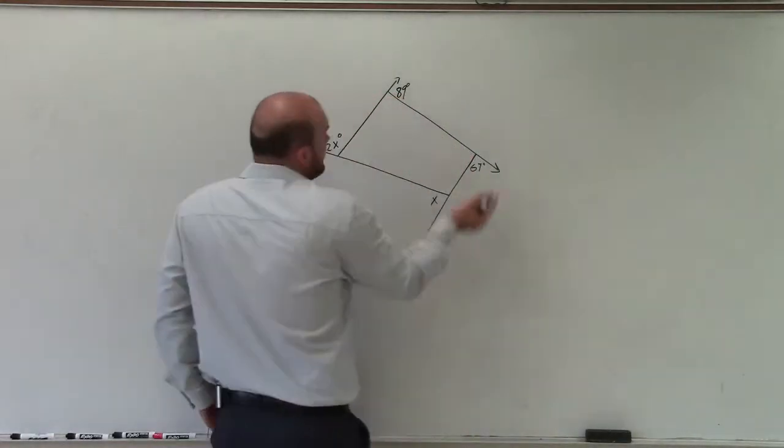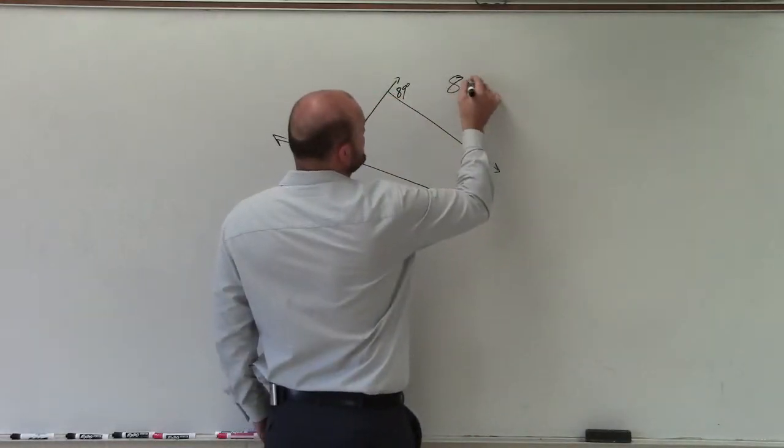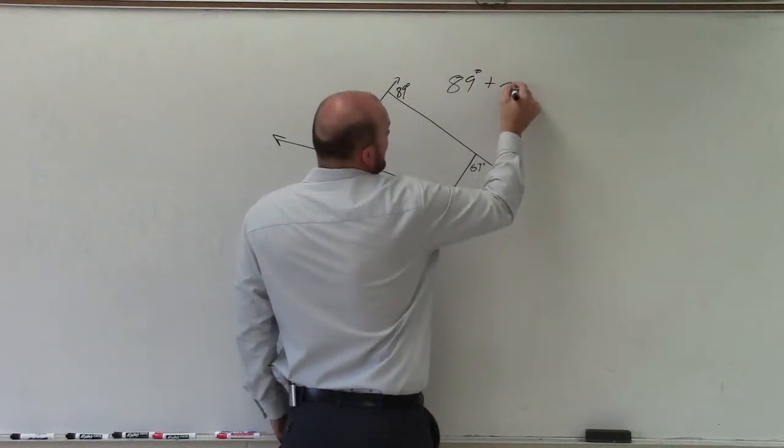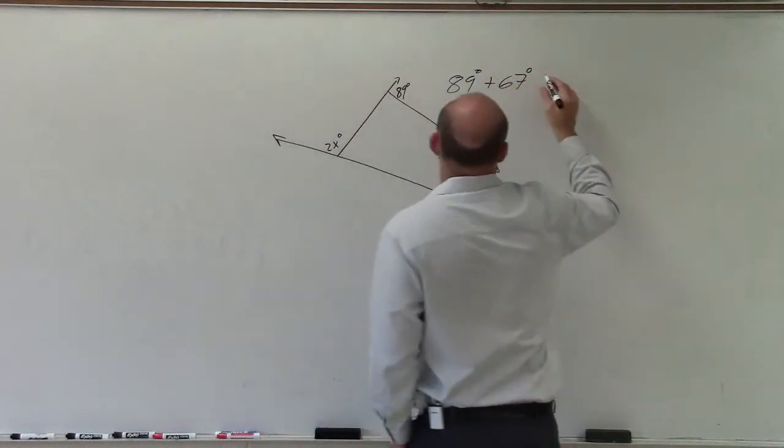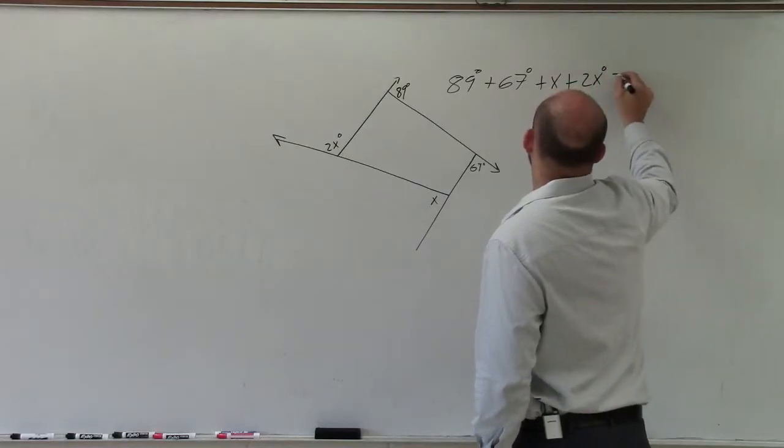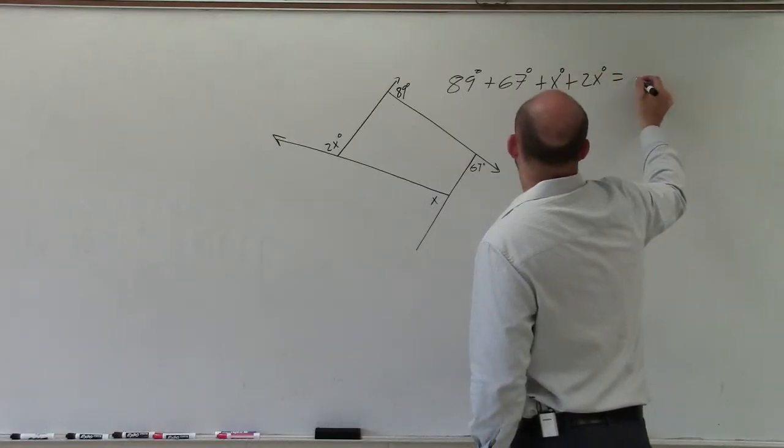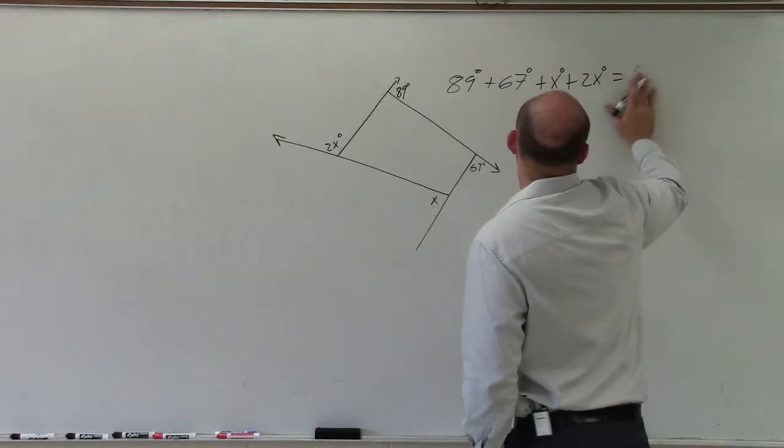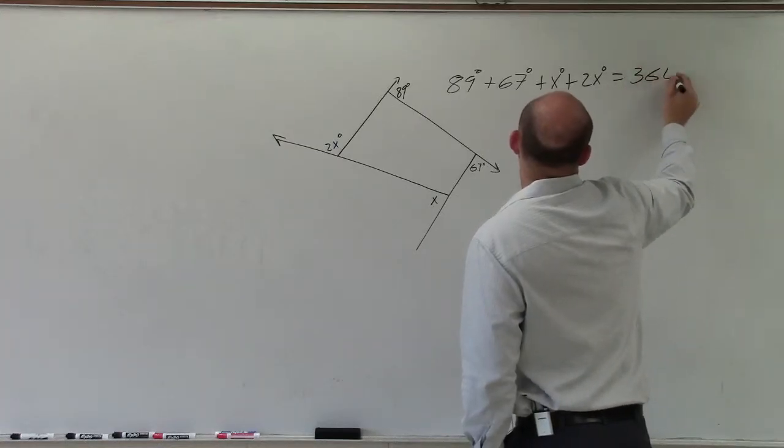So therefore, all I simply need to do is write an equation where I'm just going to add, because this is the sum, add each one of these terms up. 89 degrees plus 67 degrees plus x plus 2x degrees equals 360 degrees.